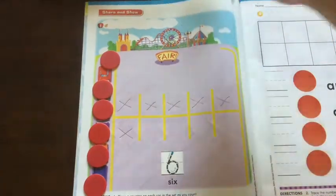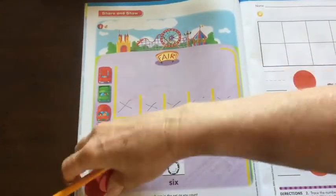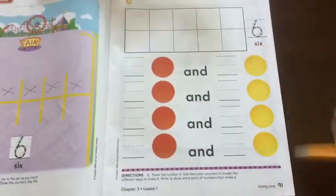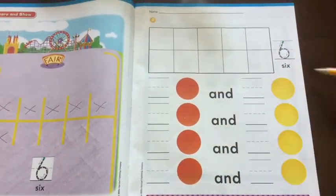Oh, look at the fair at the top. Next year we'll have our fair again in Bishop so we can all go and have fun. Page 91. We are making 6. So first let's trace our 6.